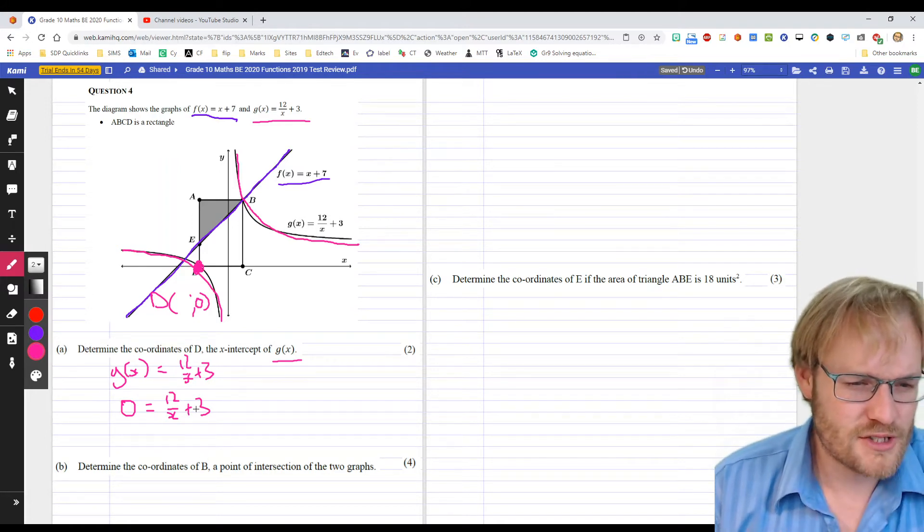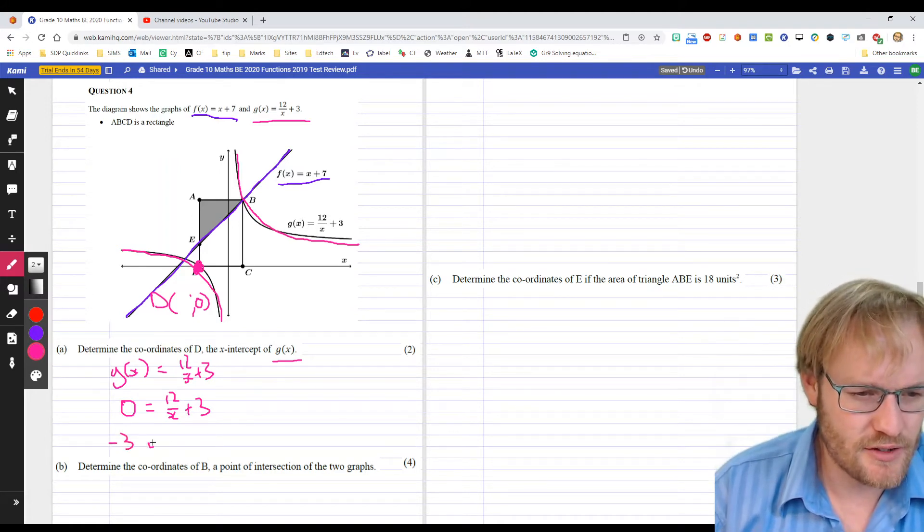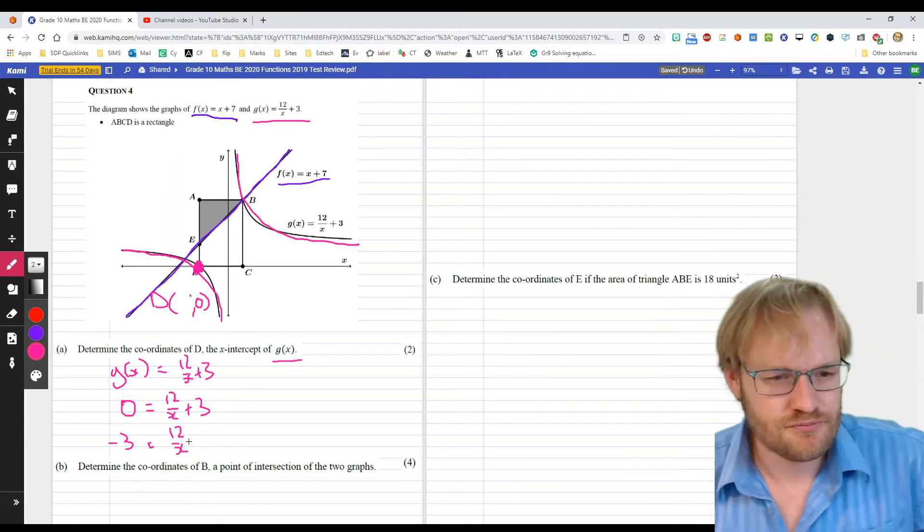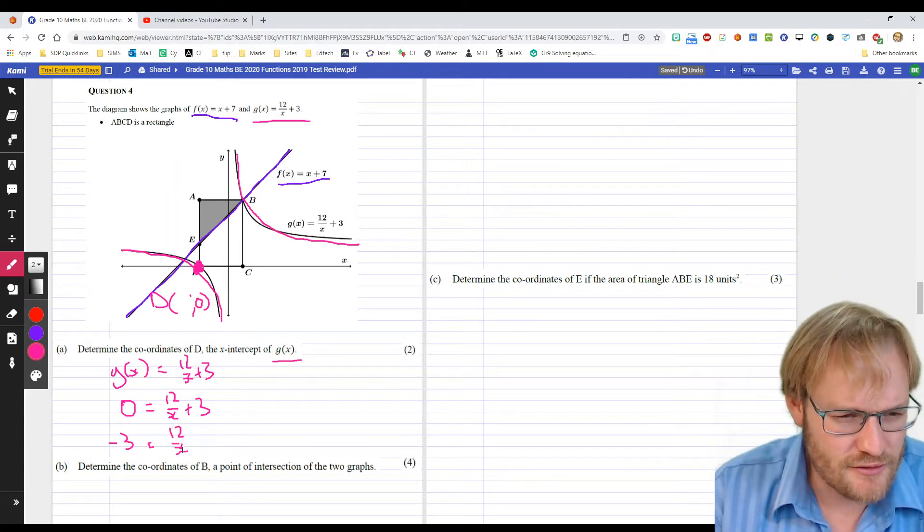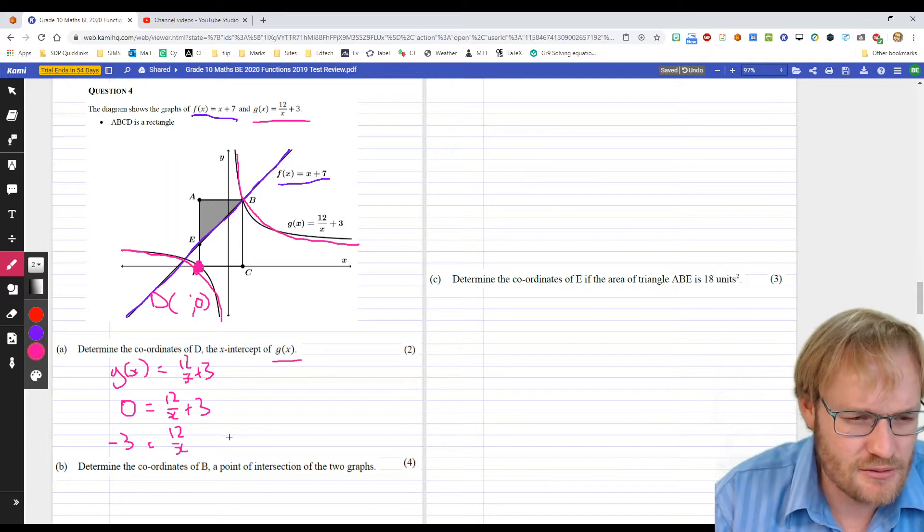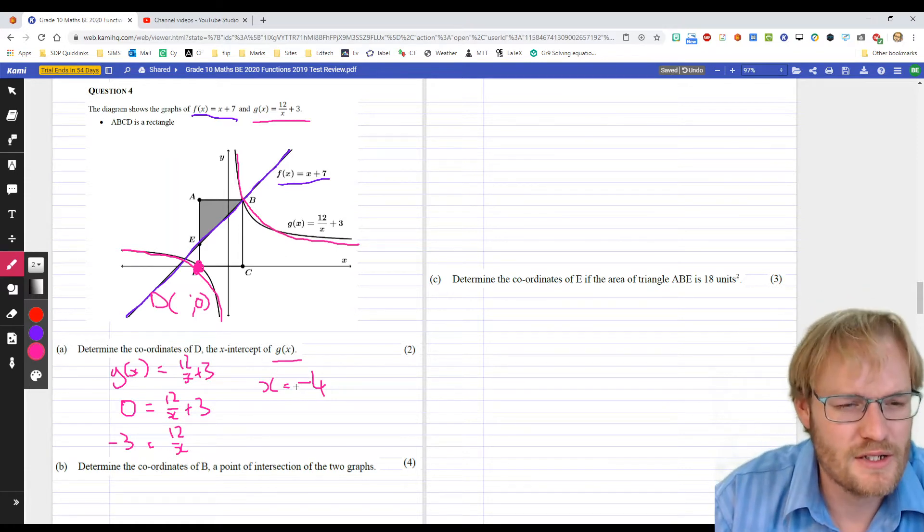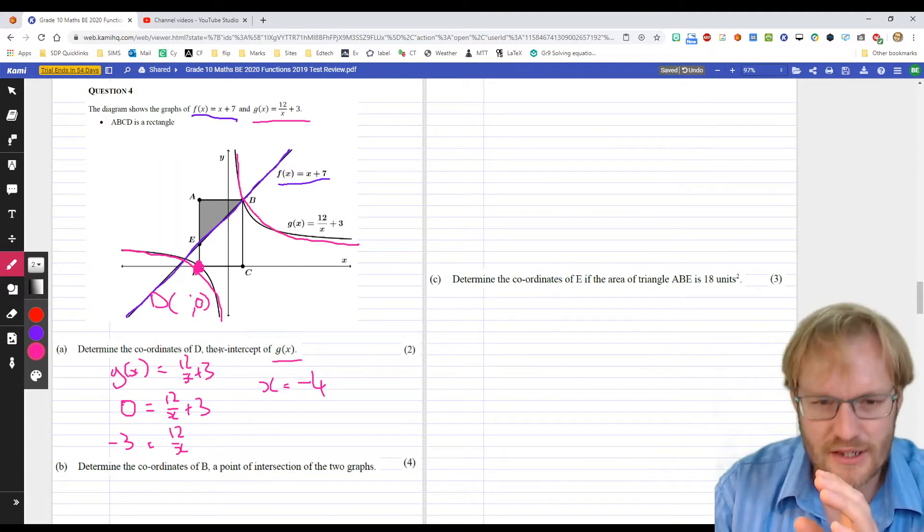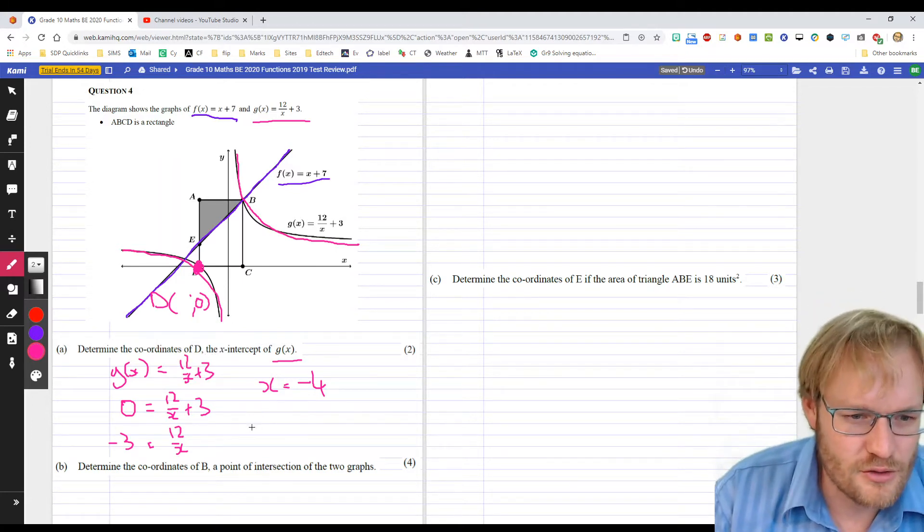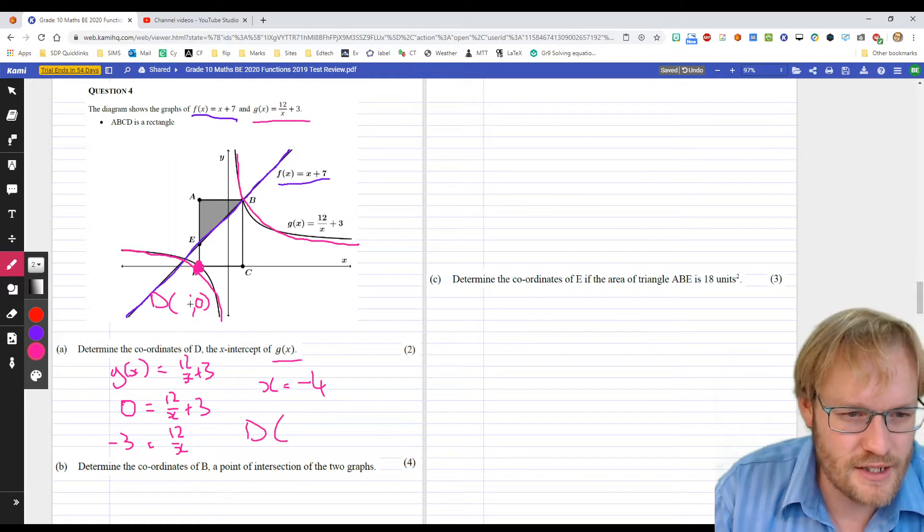Let's just subtract 3 from each side, so negative 3 equals 12 over X. 12 divided by what gives us negative 3? X must surely be negative 4. 12 divided by negative 4, yeah, that works. We're not done yet, though, because it said determine the coordinates. So, D equals